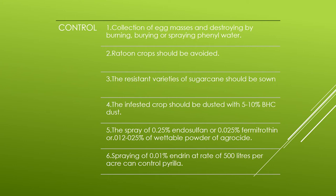Other pesticide options include spray of 0.25% endosulphane, or 0.025% fenitrothion, or 0.025% wettable powder of agricide. Additionally, a spray of 0.01% endosulphane at 500 liters per acre can control Parilla.